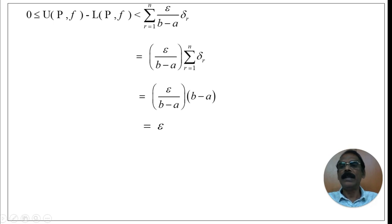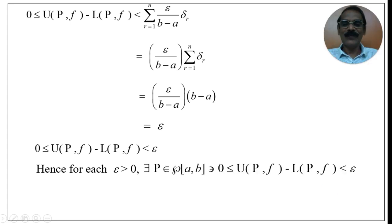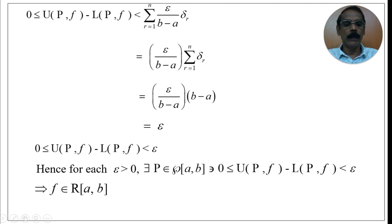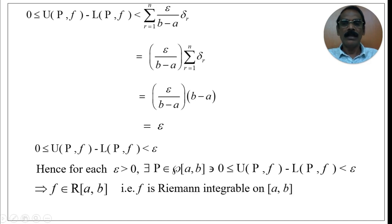Hence, for each ε > 0, there exists a partition P of the closed interval [a, b] such that 0 ≤ U(P, f) − L(P, f) < ε. Therefore, by the necessary and sufficient condition for a bounded function to be Riemann integrable, the given continuous function f is Riemann integrable on [a, b], i.e., f ∈ R[a, b].